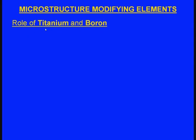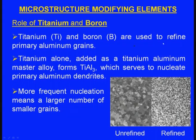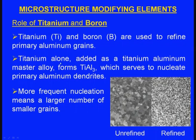Next we will see the microstructure modifying elements. The popular elements are titanium and boron. Titanium and boron are used to refine primary aluminum grains. Initially without any modifier the grain will be very coarse; when we use modifiers like titanium and boron, we get a very fine grain structure. Titanium alone, added as a titanium-aluminum master alloy, forms TiAl₃, which serves to nucleate primary aluminum dendrites. More frequent nucleation means a larger number of smaller grains. This refined grain structure offers better mechanical properties.